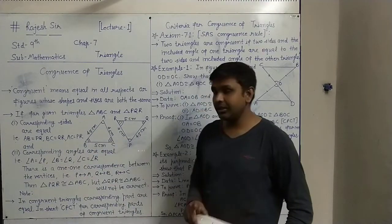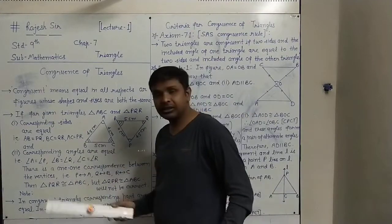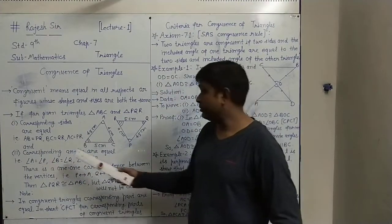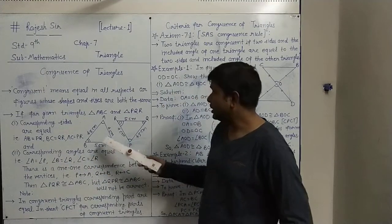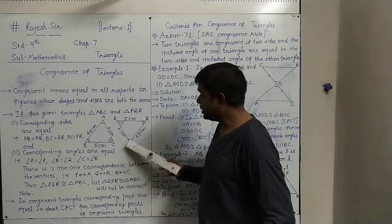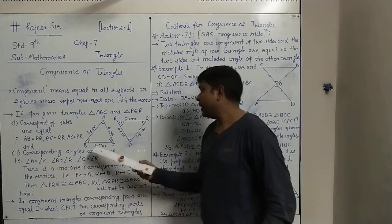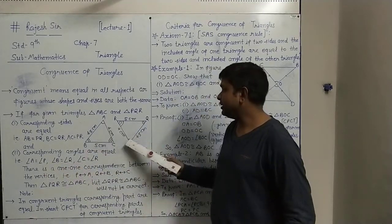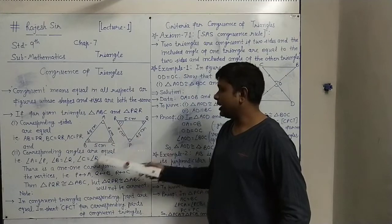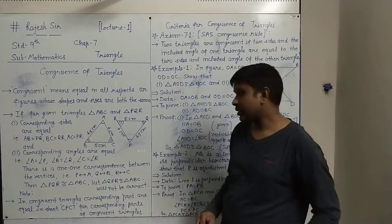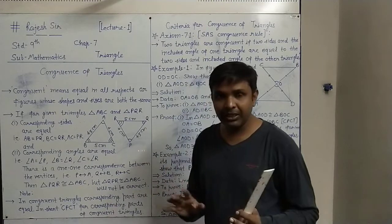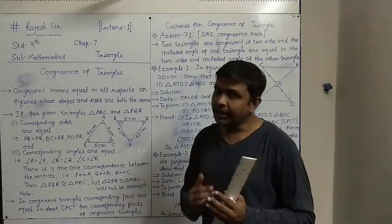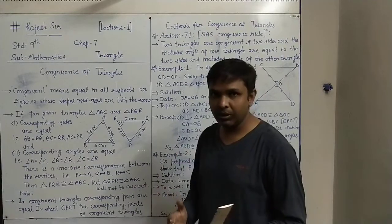Condition number one is about sides; condition number two is about angles — corresponding angles are also equal. For example, angle A and angle P are of equal measure, angle B and angle Q are of equal measure, and angle C and angle R are of equal measure. So out of a total of six parts, the corresponding three sides are equal and the corresponding three angles are also equal.